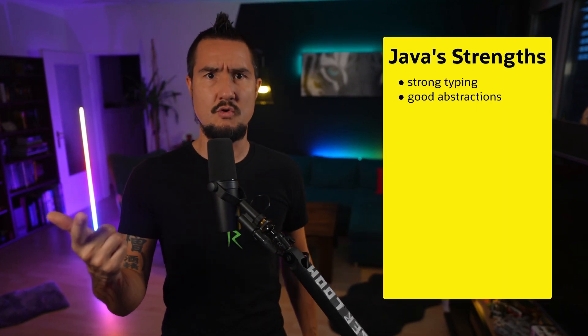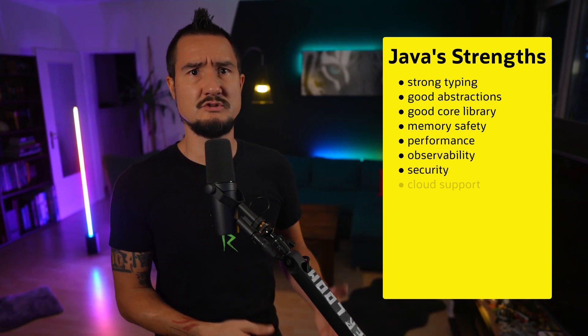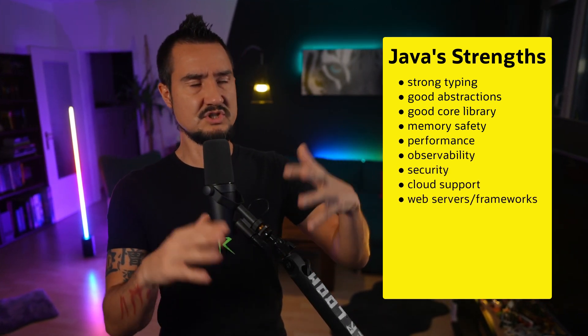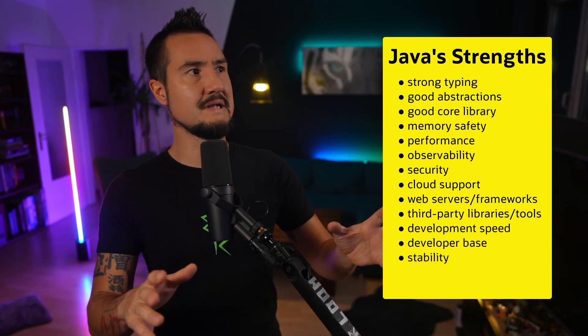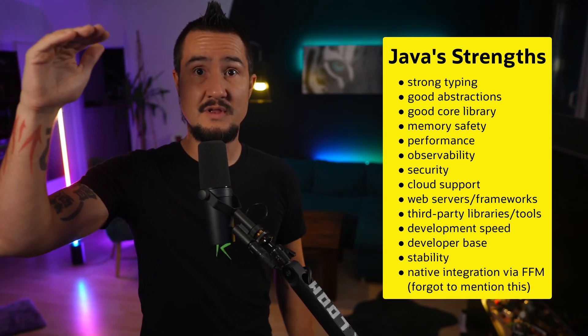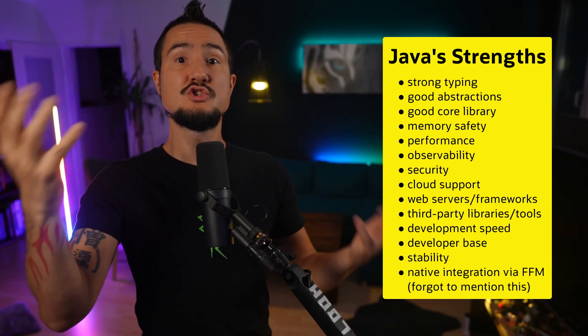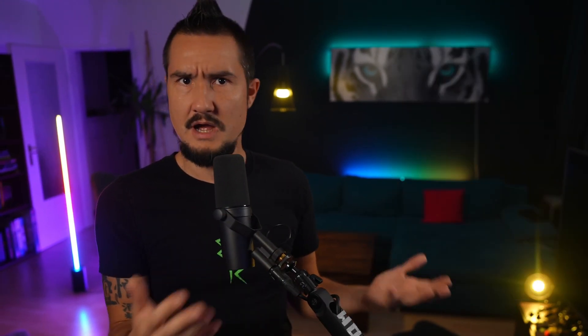Java may not be the best ecosystem just for model execution, but it is really strong and often top of its class in many other important development aspects: strong typing, good abstraction and core library, memory safety, performance, observability, security, cloud support, web server and framework choice, third-party library choice in general, development speed, developer base, stability — and the list goes on and on. All that puts Java high up on the list for projects that include AI-based features, assuming its support for model execution is sufficiently good. So how good is it?